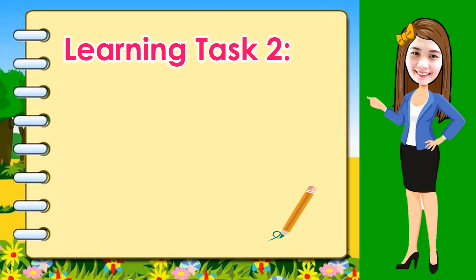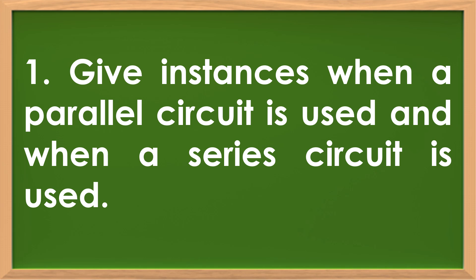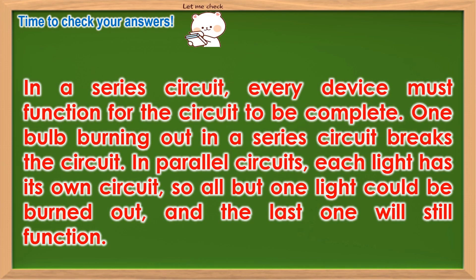Learning Task 2: Answer the following questions. Number 1: Give instances when a parallel circuit is used and when a series circuit is used. Possible answer: In a series circuit, every device must function for the circuit to be complete. One bulb burning out in a series circuit breaks the circuit. In parallel circuits, each light has its own circuit, so all but one light could be burned out and the last one will still function.